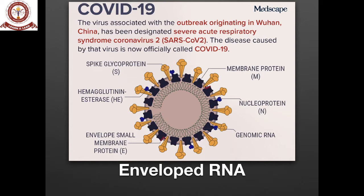The virus associated with the COVID-19 outbreak originated in Wuhan, China, and is also called SARS-CoV-2. Looking at its structure, it has an outer envelope with various proteins: the spike glycoprotein, the envelope small membrane protein (E), the membrane protein, and nuclear proteins. These proteins help the virus attach to, migrate into, and replicate within the human cell. Inside the envelope, we have the genomic RNA.